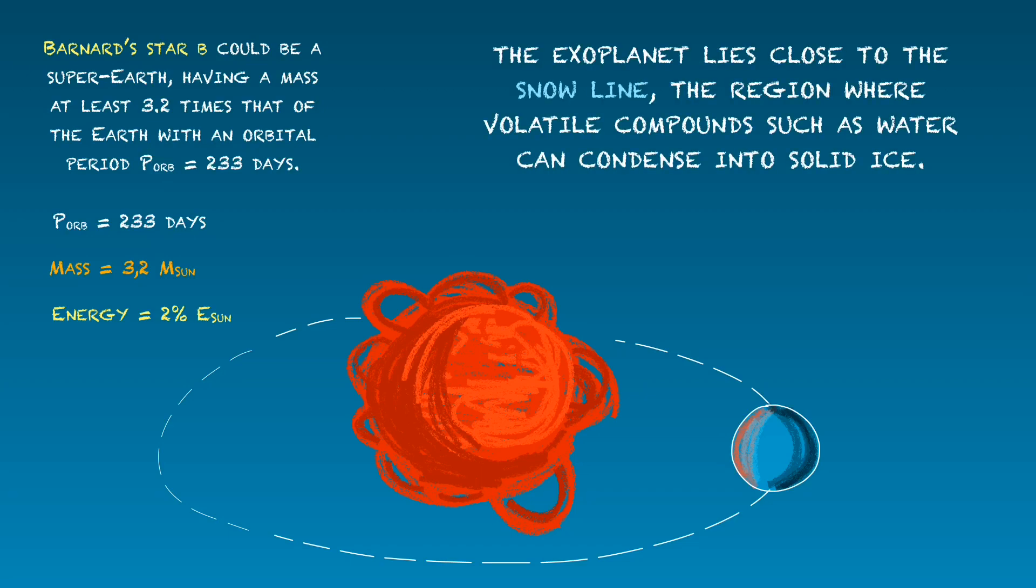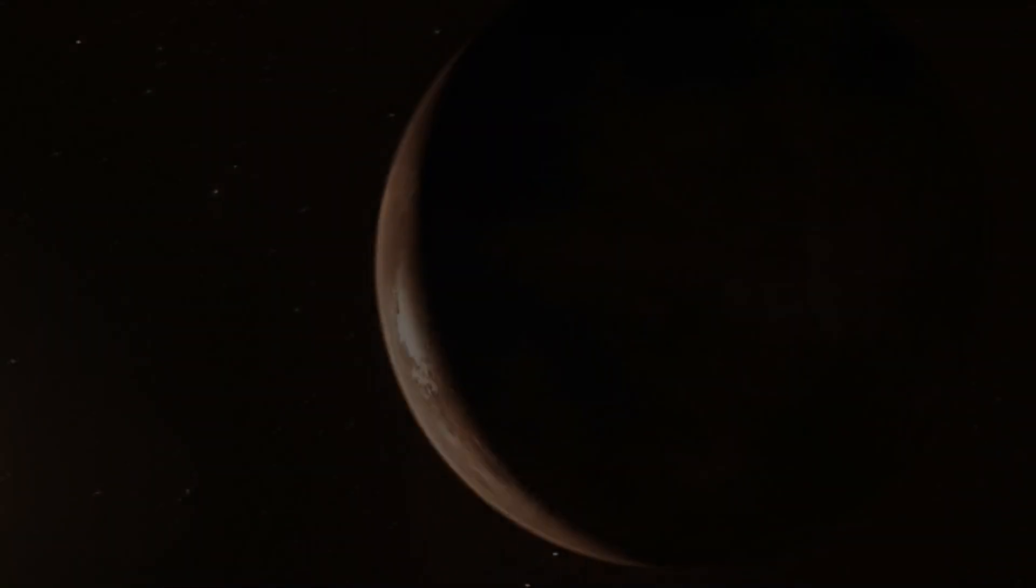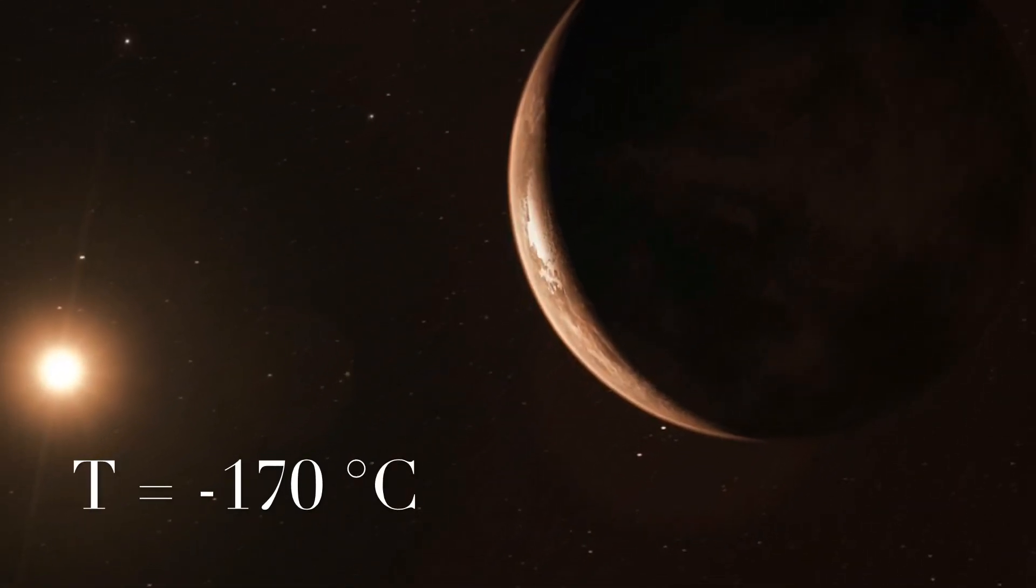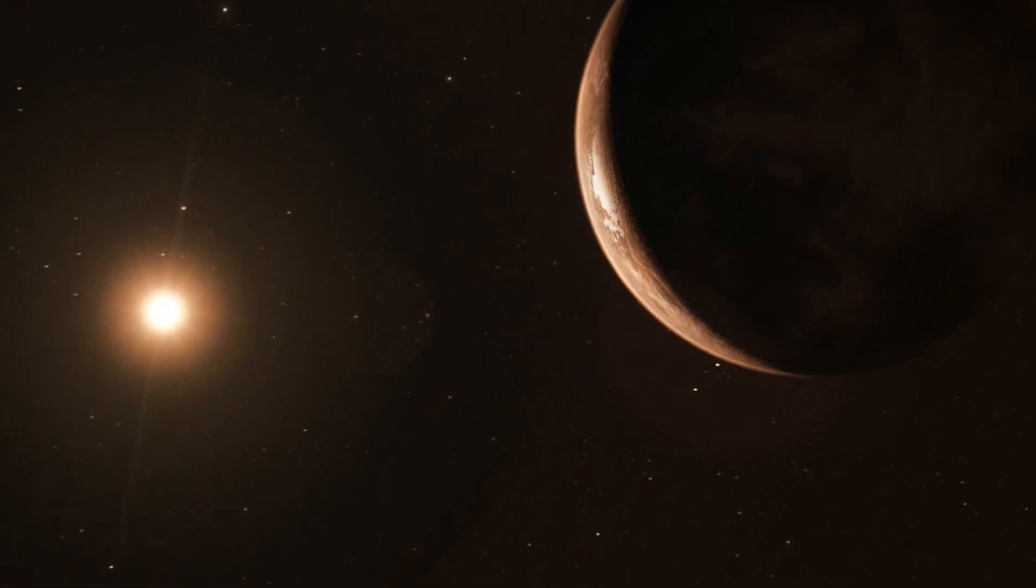the exoplanet lies close to the snow line, the region where volatile compounds such as water can condense into solid ice. This freezing, shadowy world could have a temperature of minus 170 degrees Celsius, making it inhospitable for life as we know it.